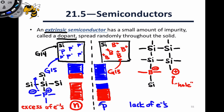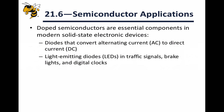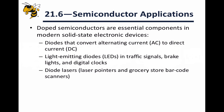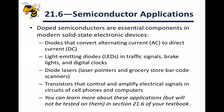We can combine extrinsic semiconductors in solid-state electronic devices to obtain elements controlled by an external current or voltage — this is basically the essence of the modern electronics revolution. Examples of materials that depend on doped semiconductors include diodes, which convert alternating current to direct current and prevent backflow of electrical current; light-emitting diodes, which emit light in the process of conducting current; diode lasers; and transistors, which control or amplify electrical signals in response to a separate electrical current or voltage.